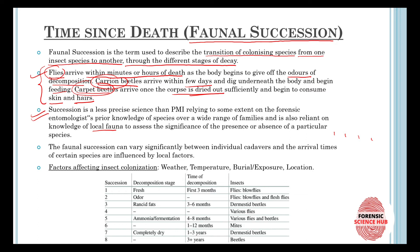Faunal succession is less precise compared to larval development estimation because the forensic entomologist must have prior knowledge of species over a wide range of families and knowledge of local fauna — including the significance of presence or absence of a particular species. Faunal succession can vary significantly between individual cadavers, and arrival times of species are influenced by local factors. Factors that affect colonization include weather, temperature, burial, exposure, and location.